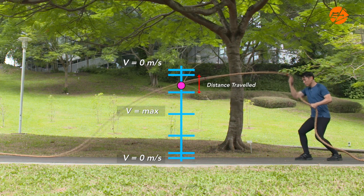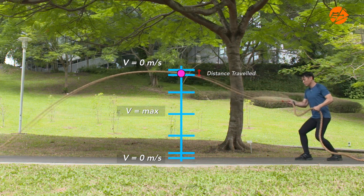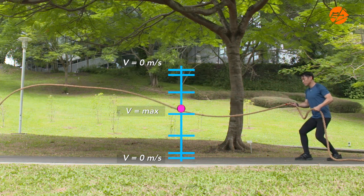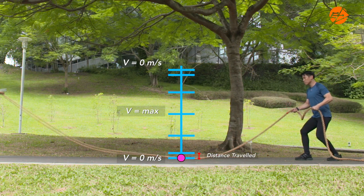The distance travelled per unit time decreases as it approaches the first turning point and similarly as it approaches the second turning point. Hence, the particle is momentarily at rest at both turning points. It attains its maximum velocity at the equilibrium position.